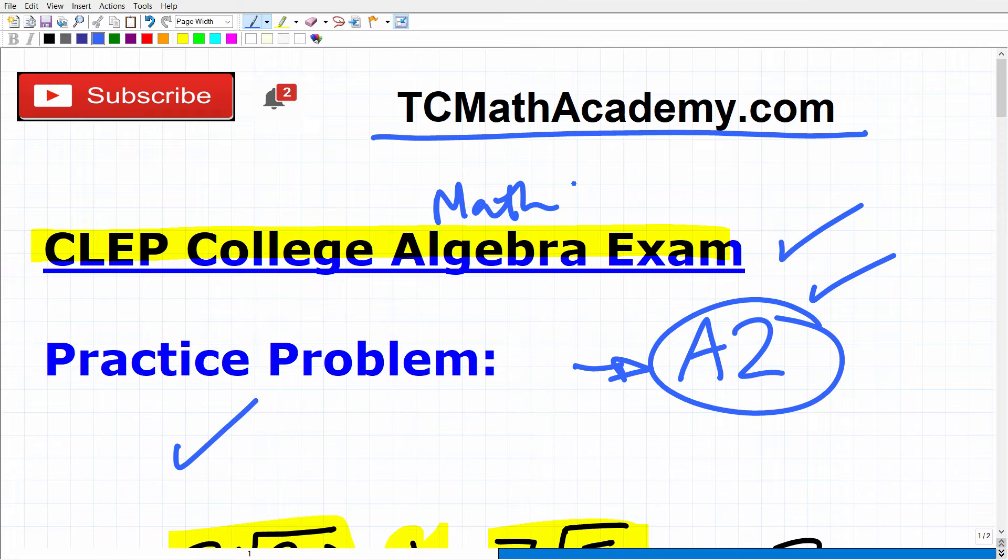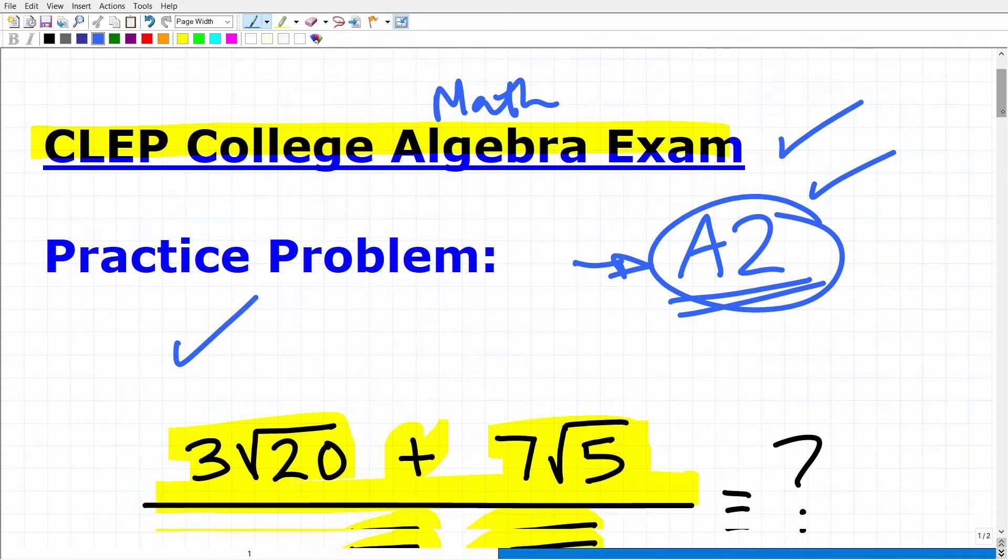So just because you maybe did well in high school Algebra 2, you have to know all this material. It's going to be fresh in your mind. And it's like taking a final exam for Algebra 1, Geometry, and Algebra 2, particularly a lot of advanced concepts in Algebra 2. Okay, so let's go ahead and get into this problem.